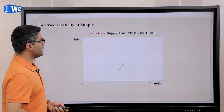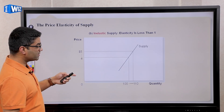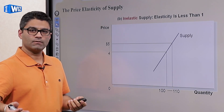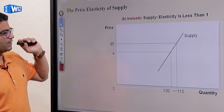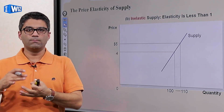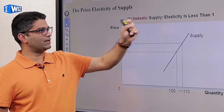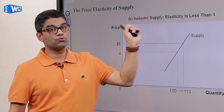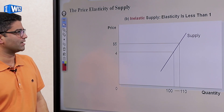An inelastic supply curve is where if the price goes up by the same amount, quantity supplied changes by a much smaller percent. In terms of the number: if a supply curve is elastic, the elasticity is going to be more than one; if the supply curve is inelastic, the elasticity is going to be between zero and one. These numbers are always going to be positive.